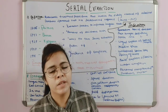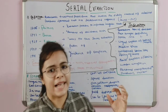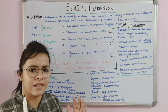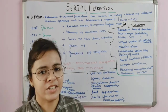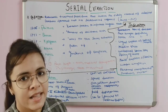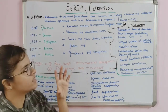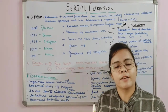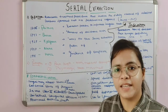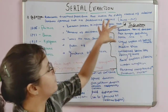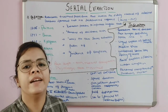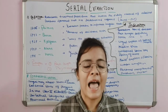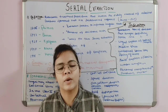When you see a crowding case, the first thing to understand is the definition of serial extraction. The definition was given by Dwell in 1969: serial extraction is an orthodontic treatment procedure that involves the orderly removal of deciduous as well as permanent teeth in a pre-determined sequence.